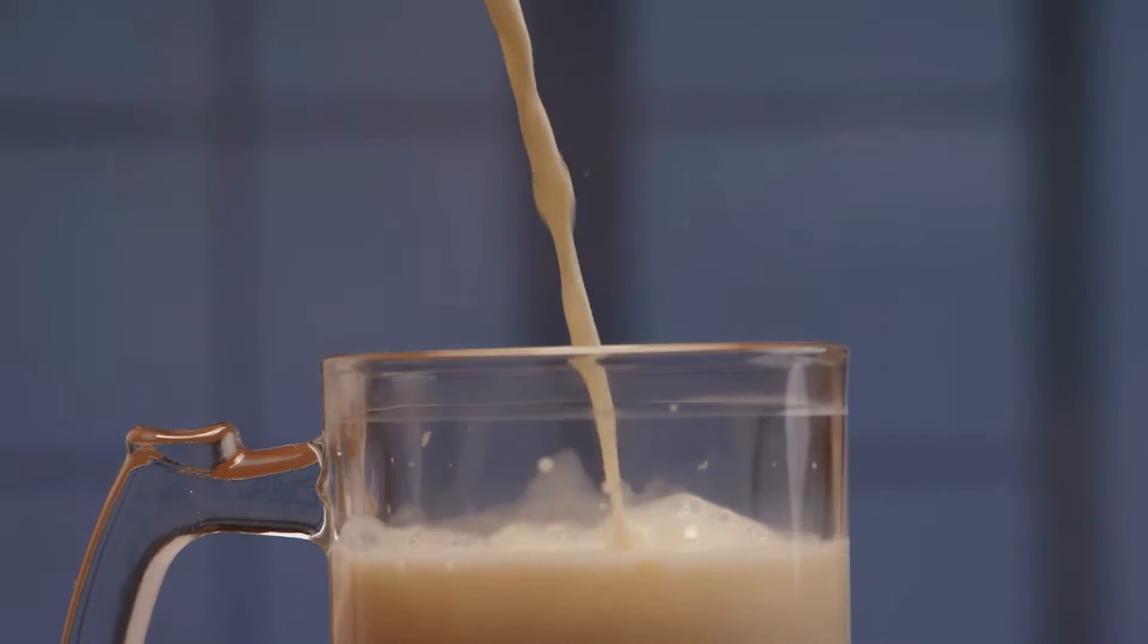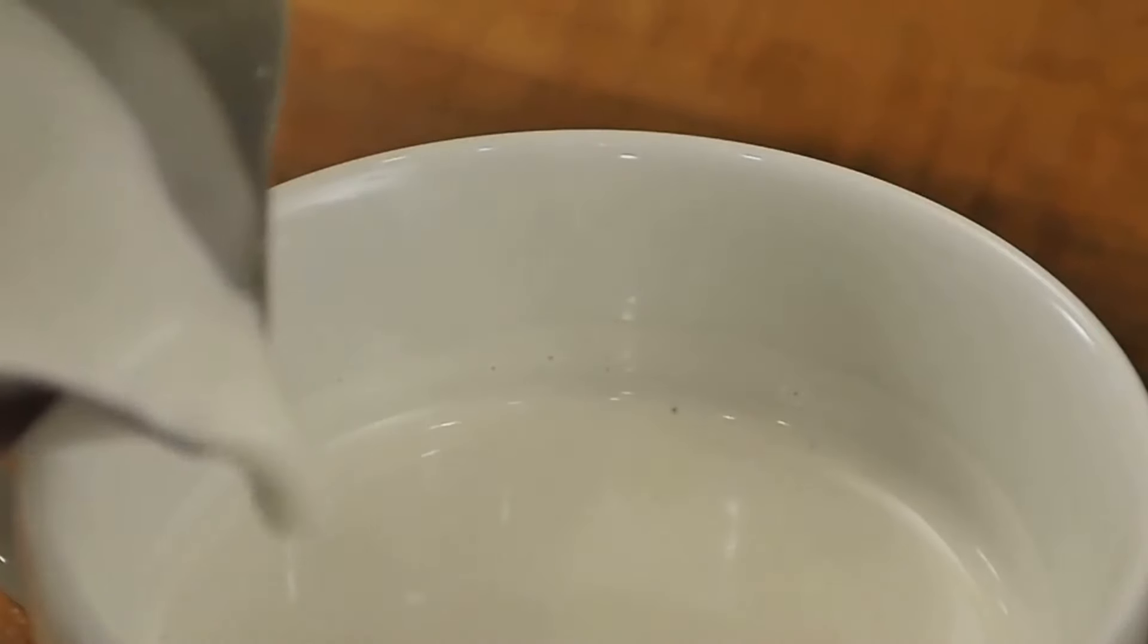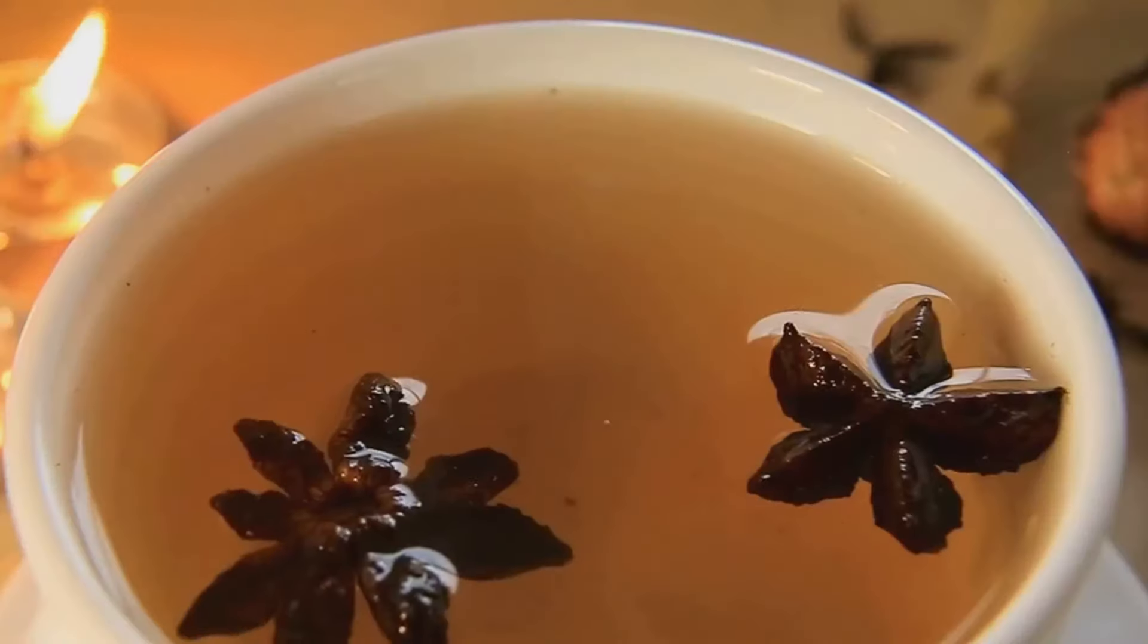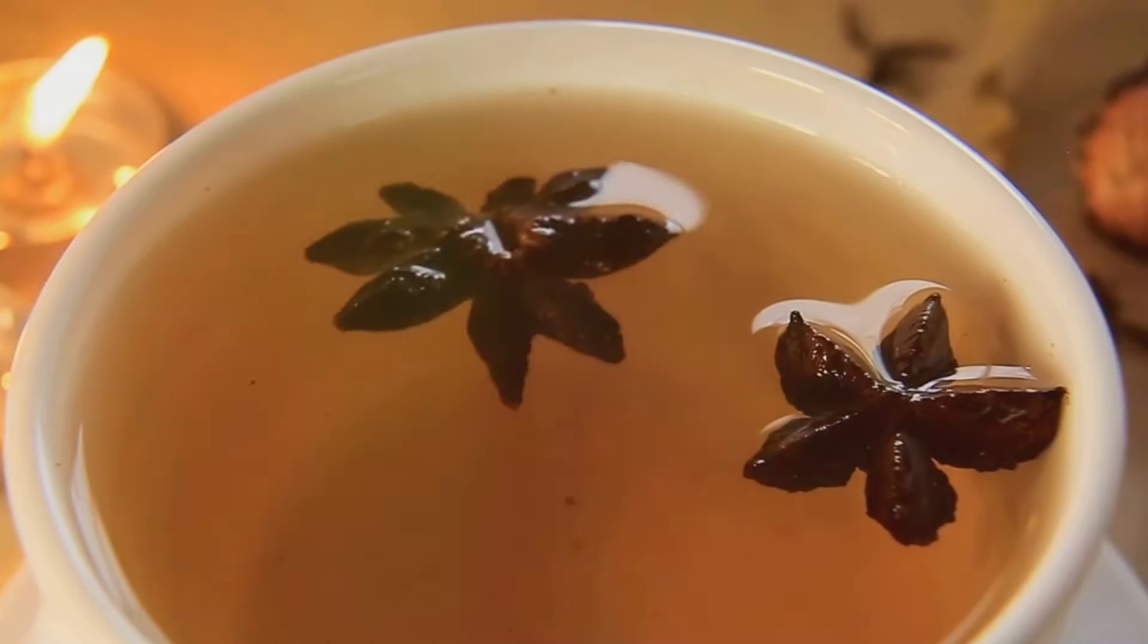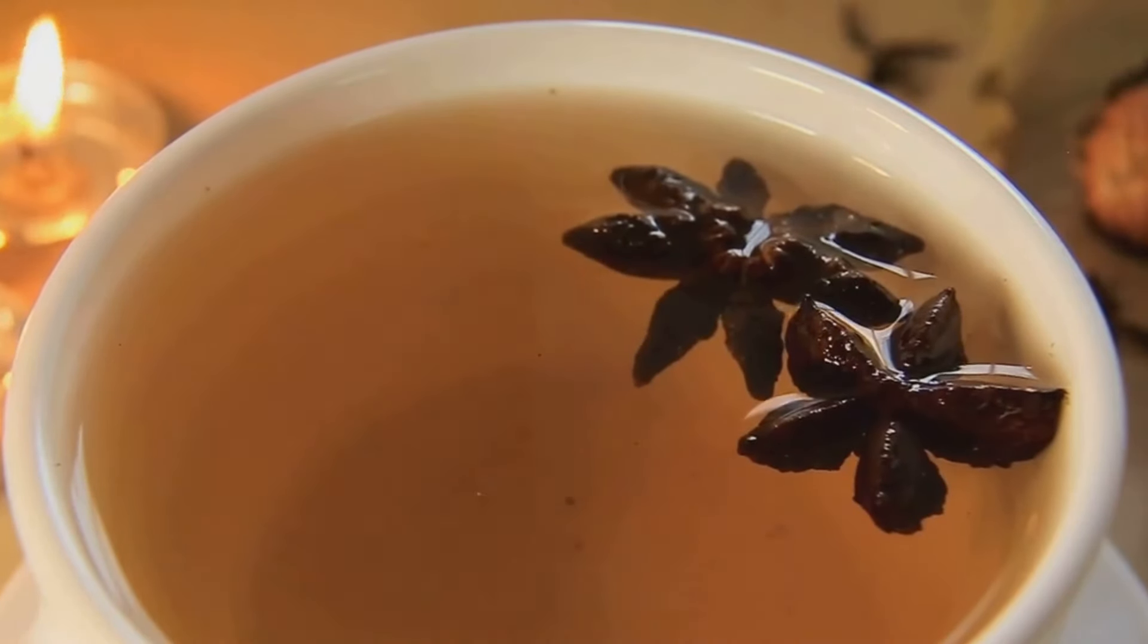Another interesting recipe is clove and cinnamon almond milk. This is a warm and cozy drink perfect for winter nights. Heat two cups of almond milk and add a cup of clove water. Throw in a stick of cinnamon for that extra spice. The combination of almond milk, cloves, and cinnamon creates a comforting drink that not only tastes amazing but also helps in digestion and boosts immunity.